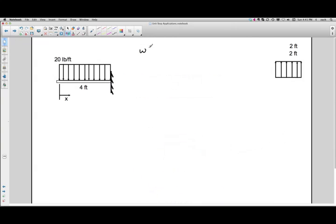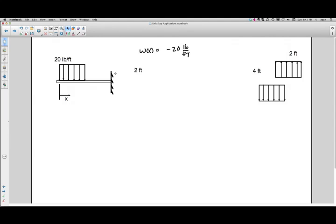Well this is really quite simple because the w of x here is equal to minus 20 pounds per foot and that's good anywhere along that four foot length of that beam. However, our real situation is this one in which we have two feet here that has our 20 pounds per foot and then we have another two feet that doesn't have it there.